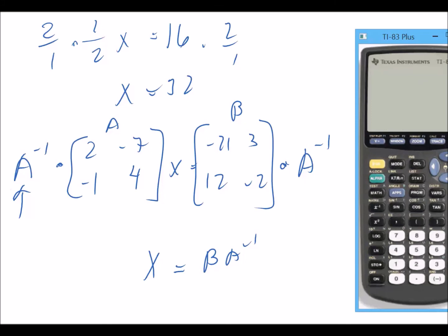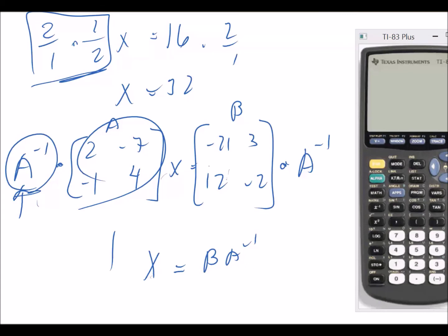So you can do this a couple ways. You know that inverse of A right here times A is going to be 1, just like how 2 over 1 times 1 over 2 is 1. So we don't actually have to do that side. We just have to do x equals B times the inverse of A. So let's go ahead and do that.